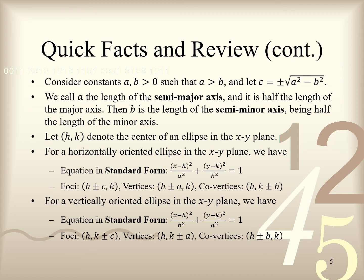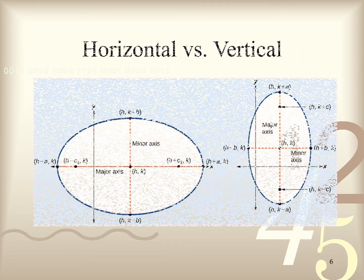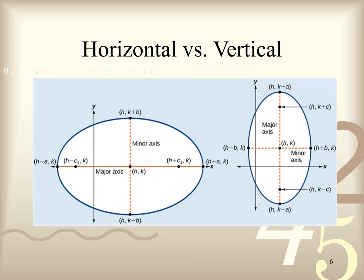Ellipses can also be expressed in terms of polar coordinates, but because of time constraints, we shall only consider them in Cartesian coordinates. Note that in the standard form equations, if A equals B, then we obtain the equation of a circle centered at the point (h, k) with radius A. This justifies the fact that a circle is just a special case of an ellipse. This image geometrically summarizes the standard form of an ellipse oriented horizontally versus vertically, centered at the point (h, k) in the x-y plane. It can be found at the URL given below.